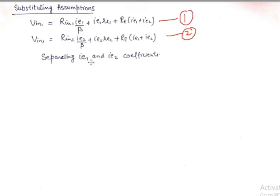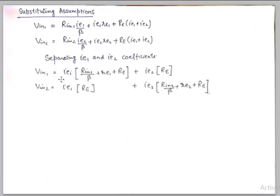And separating IE1 and IE2's coefficients in these equations. What I get is Vin1 becomes IE1 into Rin1 upon beta plus RE1 plus RE, plus IE2 into RE. And IE2 has Rin2 upon beta plus RE2 plus RE in the coefficient for second equation.